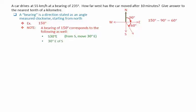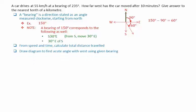From the speed and time, calculate the total distance traveled. Draw a diagram to find the acute angle with west using the given bearing. Solve the resulting triangle for the west component.